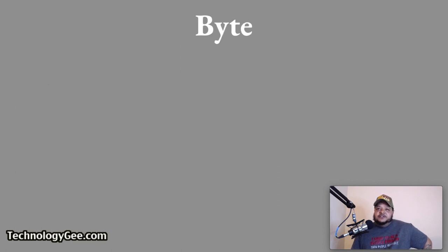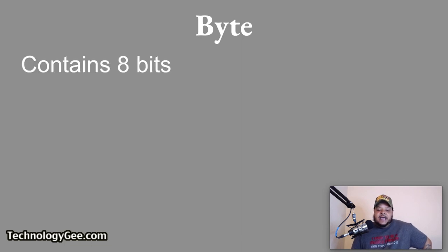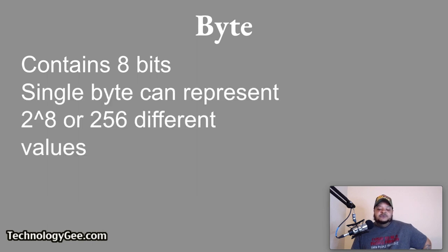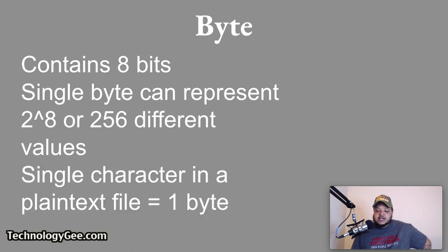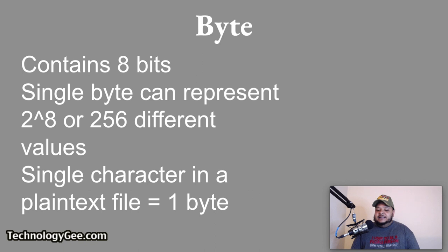A byte is a data measurement unit that contains 8 bits, or a series of 8 zeros and ones. A single byte can be used to represent 2 to the 8th, or 256 different values. Also, a single character in a plain text file requires a byte to store it. Multiples of bytes are used by all larger units of measure.